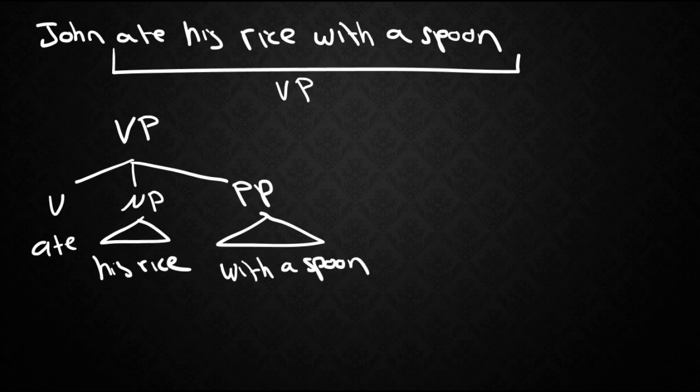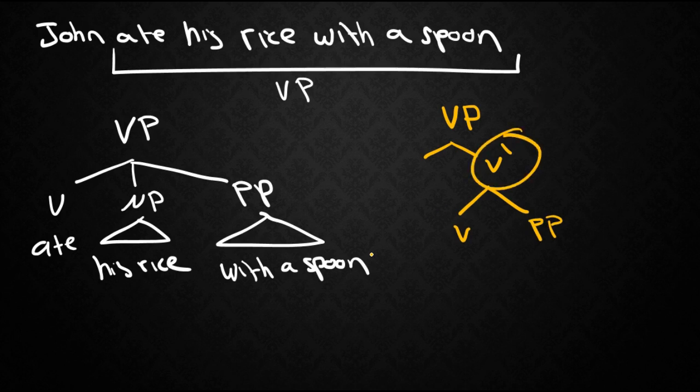Now we're going to try to follow the same logic that we did in the previous e-lecture with noun phrases. We're going to try to draw a similar structure to that which we used in the noun phrase which is one with bar levels. Okay something like this. How can we motivate a bar level in the verb phrase? Well let's try to follow the same logic we did with the noun phrase. Let's look at constituency.